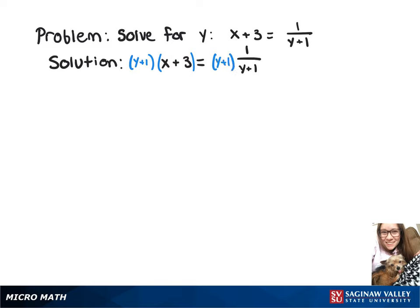Now we've got y plus 1 times x plus 3 equals 1. Now we'll divide both sides by x plus 3.